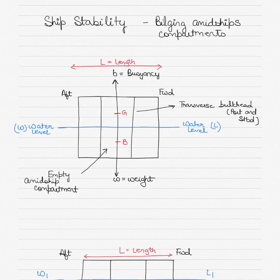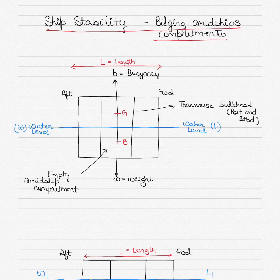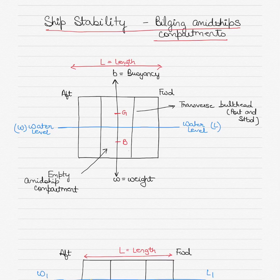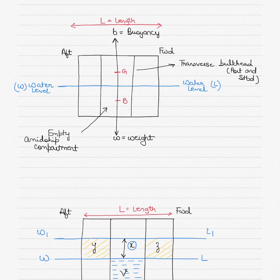Continuing with the videos on ship stability, today I take up an important topic which focuses on bilging of the midships compartments on ships or vessels. We'll take up the case of a box shaped vessel. I'll discuss firstly the theory behind bilging, then move on to a numerical example. This is advanced stability, so make sure you have watched my previous videos on ship stability before watching this one.